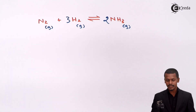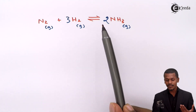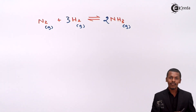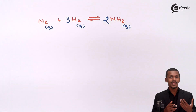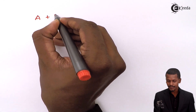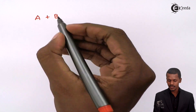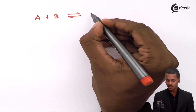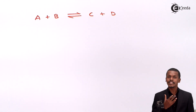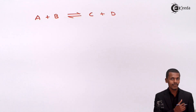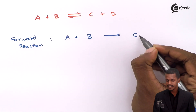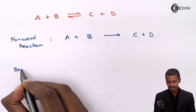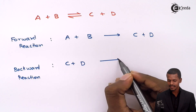When chemical equilibrium is attained, the rate of the forward reaction and the rate of the backward reaction are almost the same. For example, the forward reaction is: N2 + 3H2 → 2NH3, while the backward reaction is: 2NH3 → N2 + 3H2. For a general example, consider the reversible reaction A + B ⇌ C + D, where the forward reaction converts A + B into C + D and the backward reaction converts C + D back into A + B.